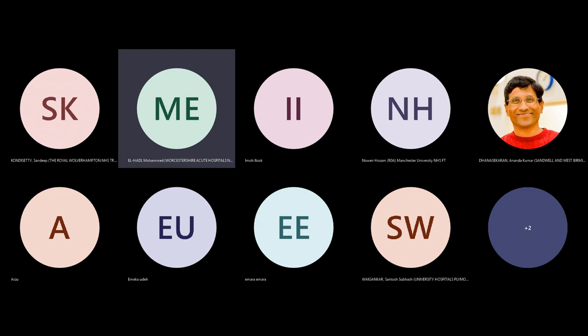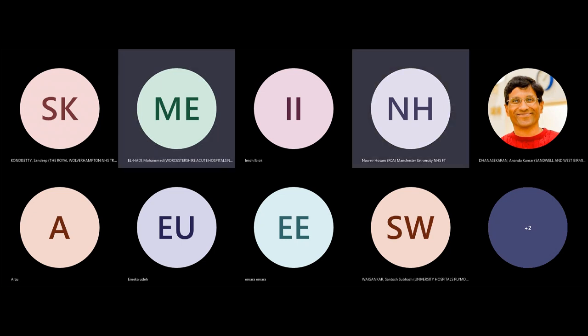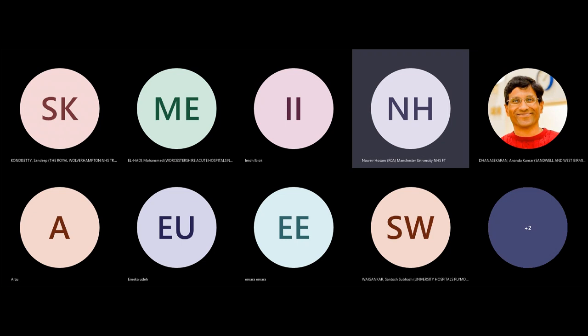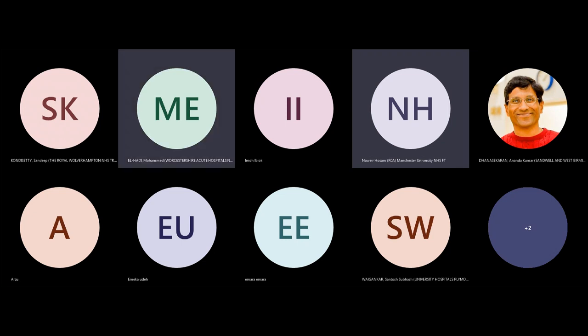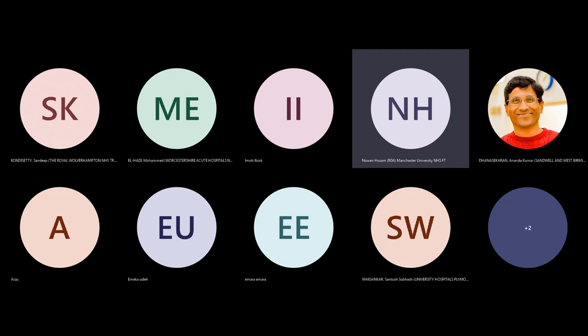Continuing the scenario — you cleared the stone on the left and want to address the partial staghorn on the other side. What investigations do you want to arrange before talking to her about management? For this lady, I'd like to know the differential renal function to see if it's a functional kidney or not, to decide whether to salvage the kidney or remove it if it's causing recurrent UTIs or pain. I'm going to request a DMSA.